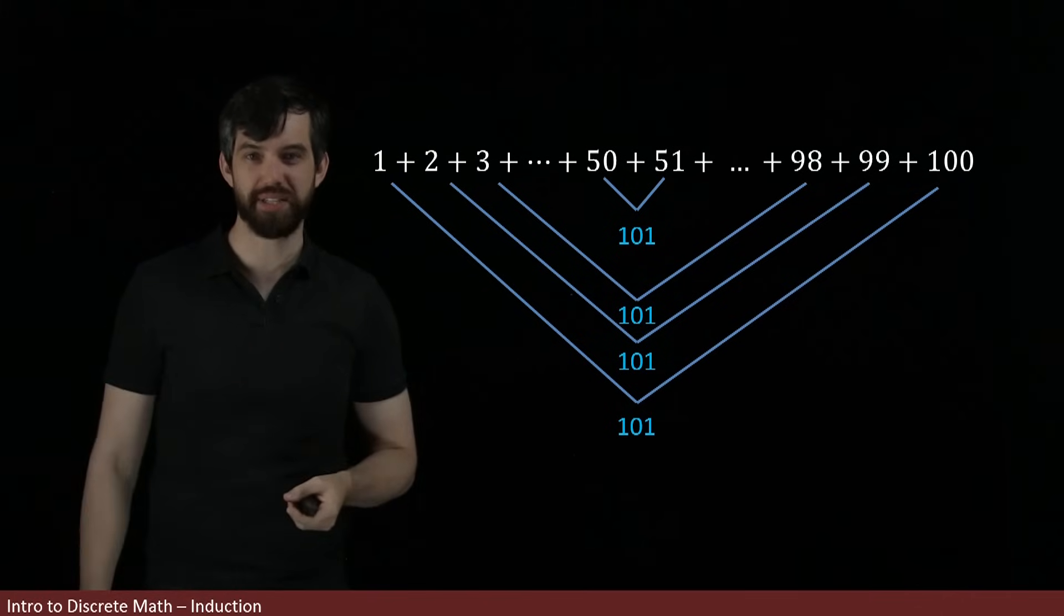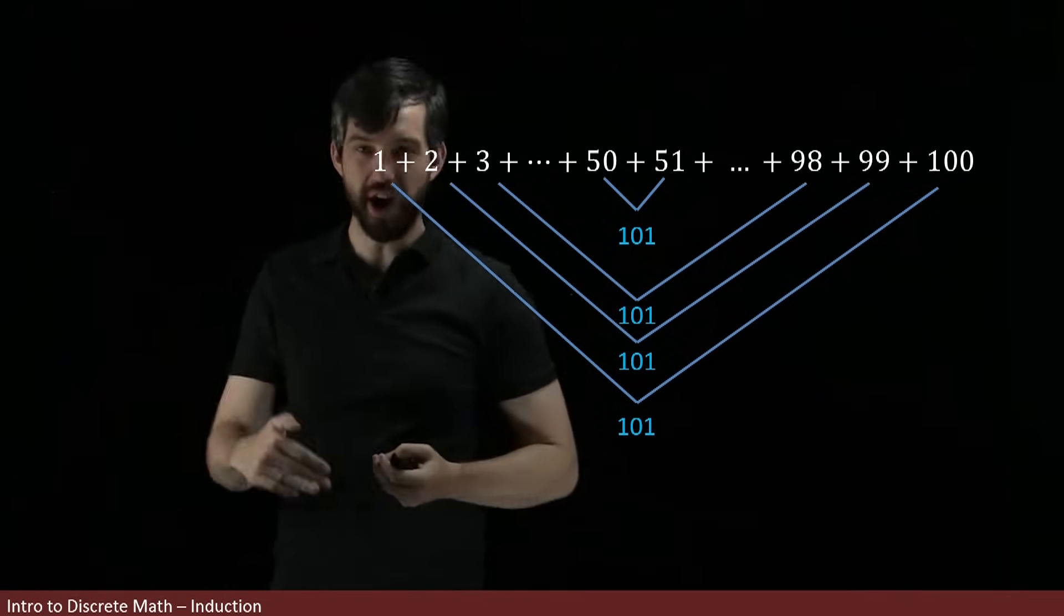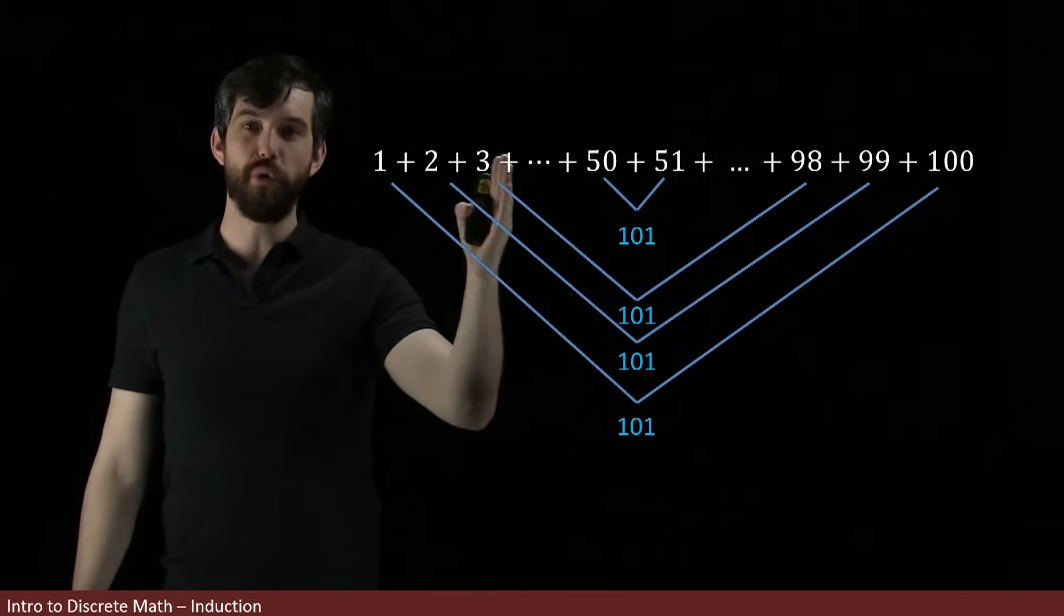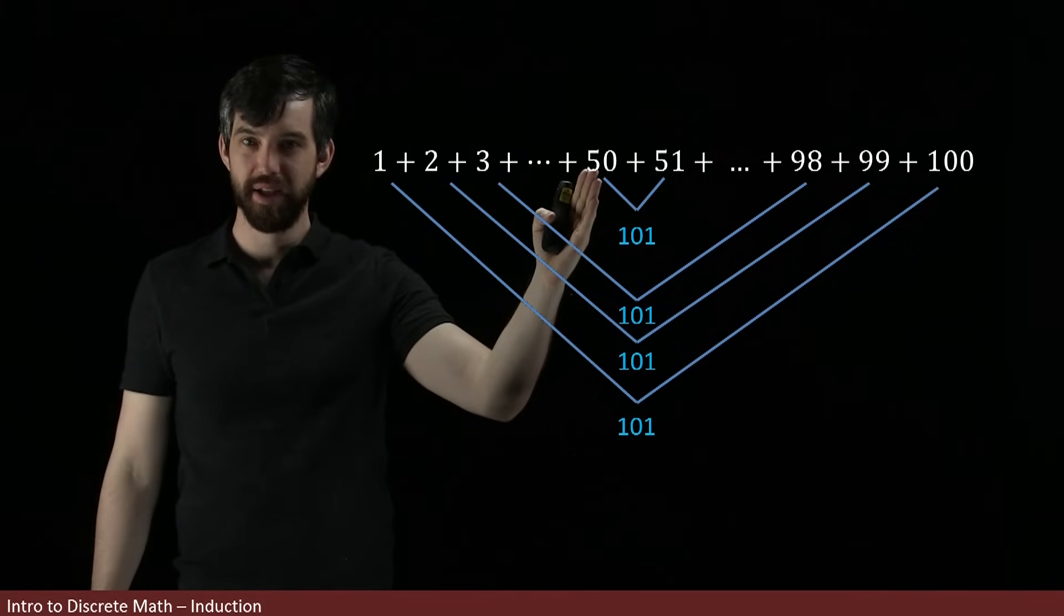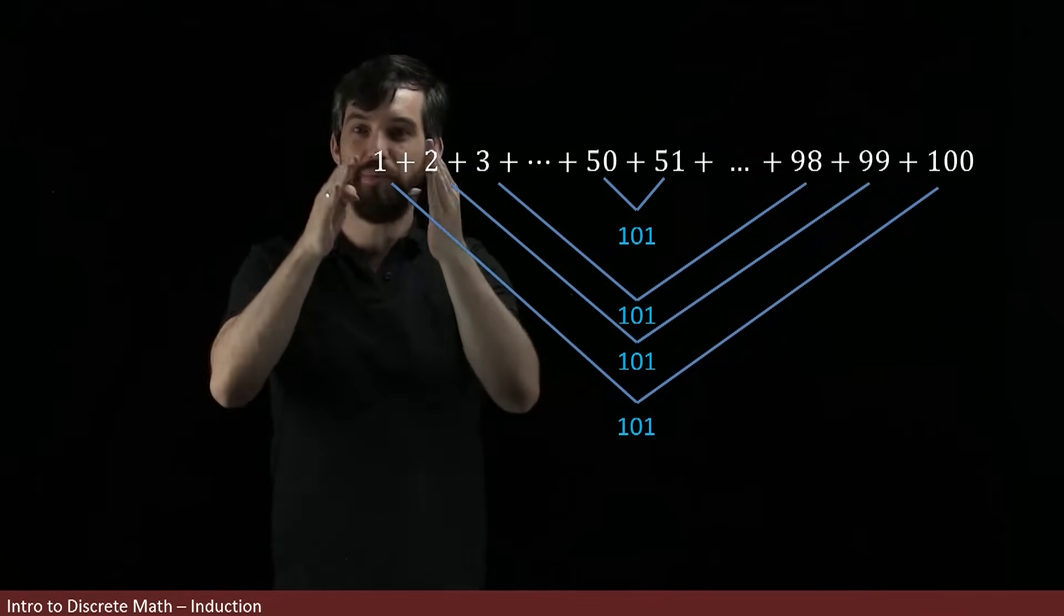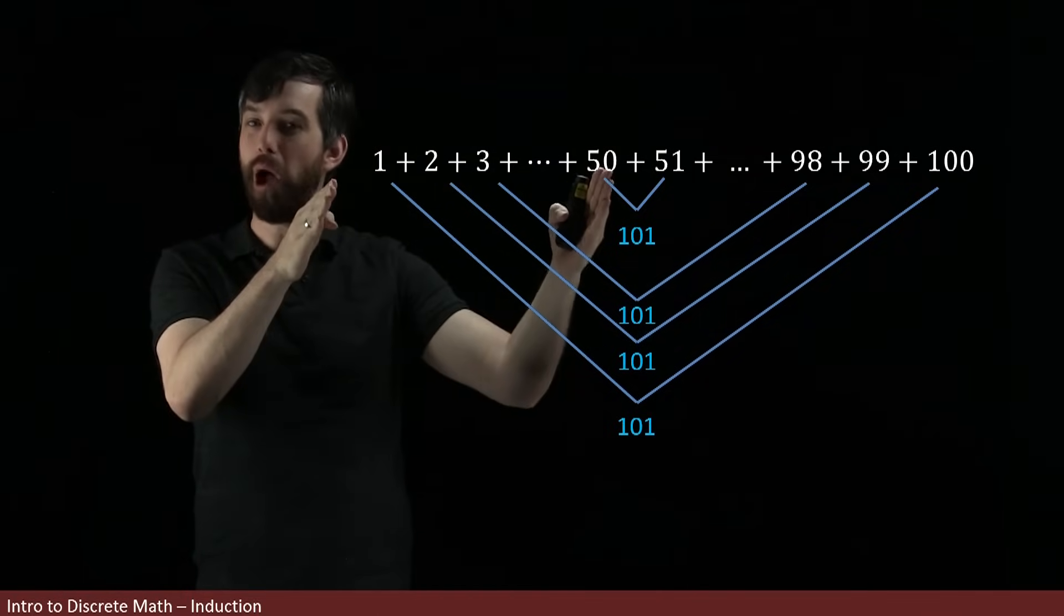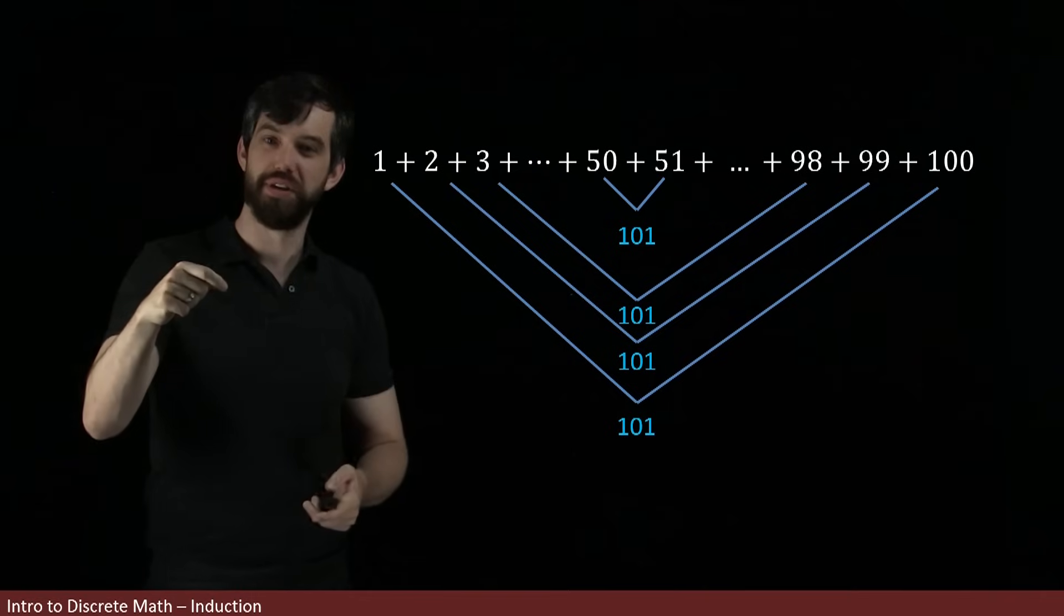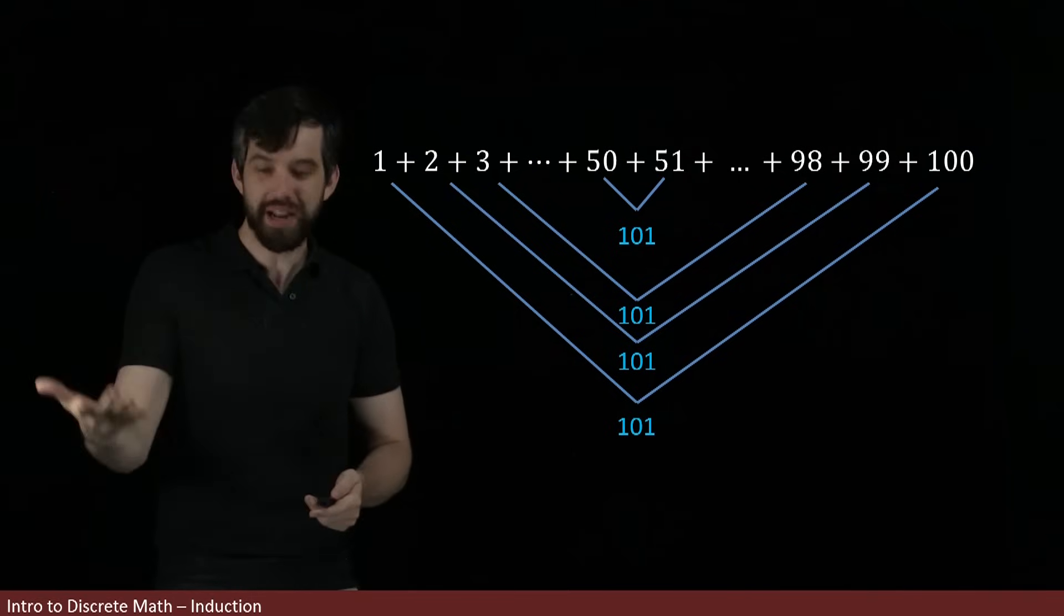At some point, I'm going to get to the middle, where I'm going to have my 50 and my 51, that's going to give me another value of 101. So if I think about what happens here, is I've got, when I take this sum, I've got a whole bunch of 101's, and in fact there's 1 all the way up to 50 of them, because then the 51 up to 100 are already sort of paired away. So what I have is 50 copies of 101, or in other words, 5050.